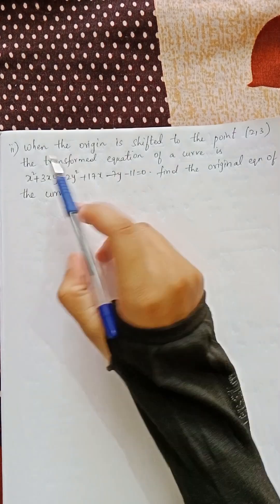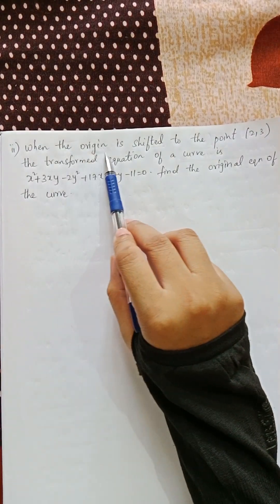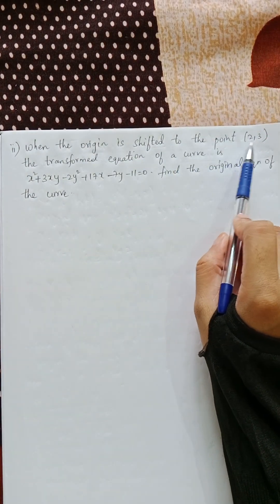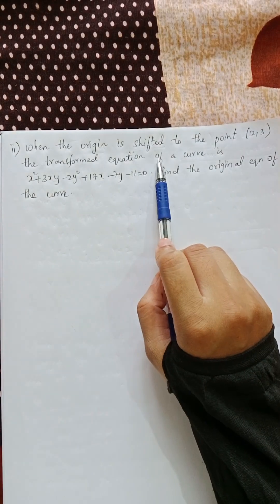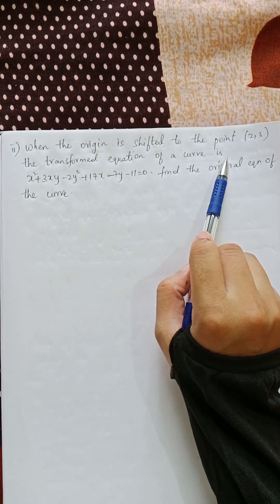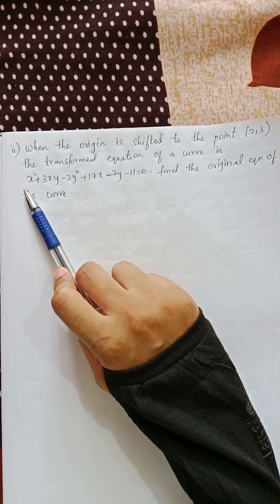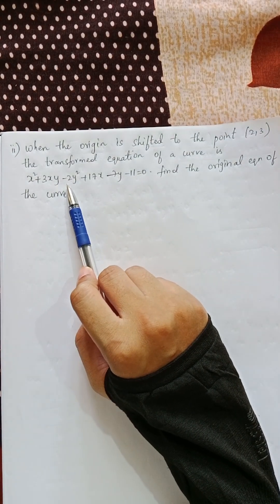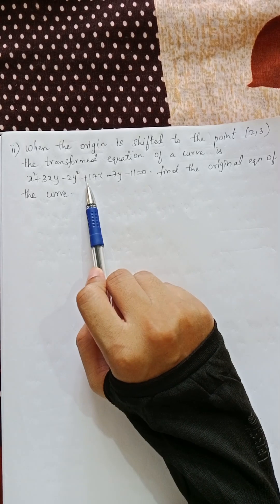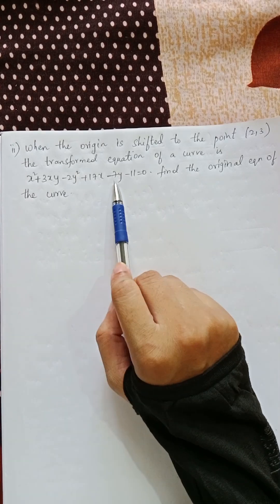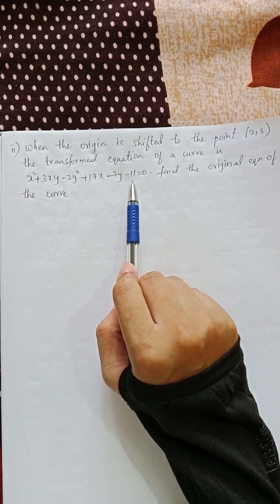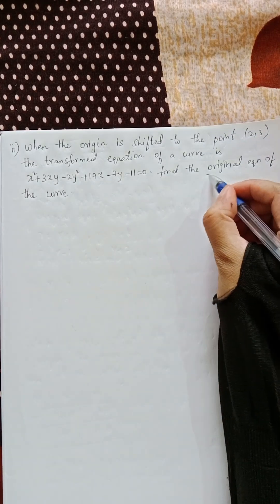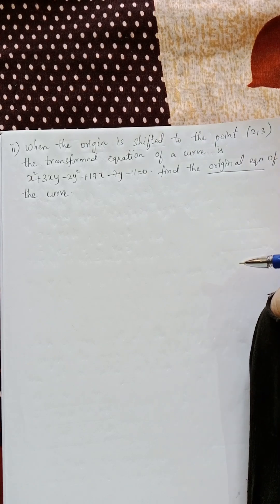The next question is: when the origin is shifted to the point (2, 3), the transformed equation of the curve is x² + 3xy - 2y² + 17x - 7y - 11 = 0. Find the original equation.